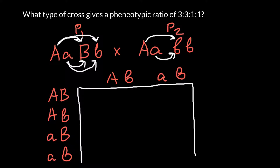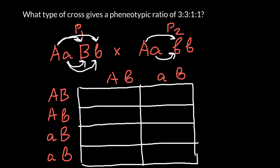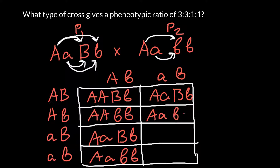Parent 1 can produce four variants of gametes, but Parent 2 can only produce two variants. Listing all possible genotypes from the Punnett square, we get: AA BB, AA bb, Aa Bb, Aa bb, Aa BB, Aa bb, aa Bb, and aa bb — giving us eight combinations in total.